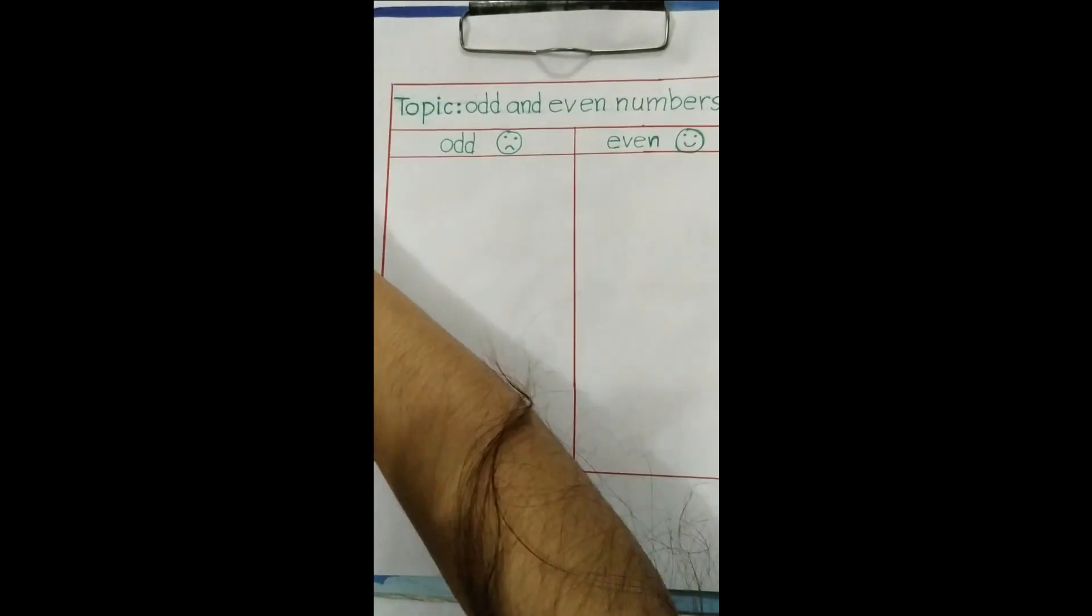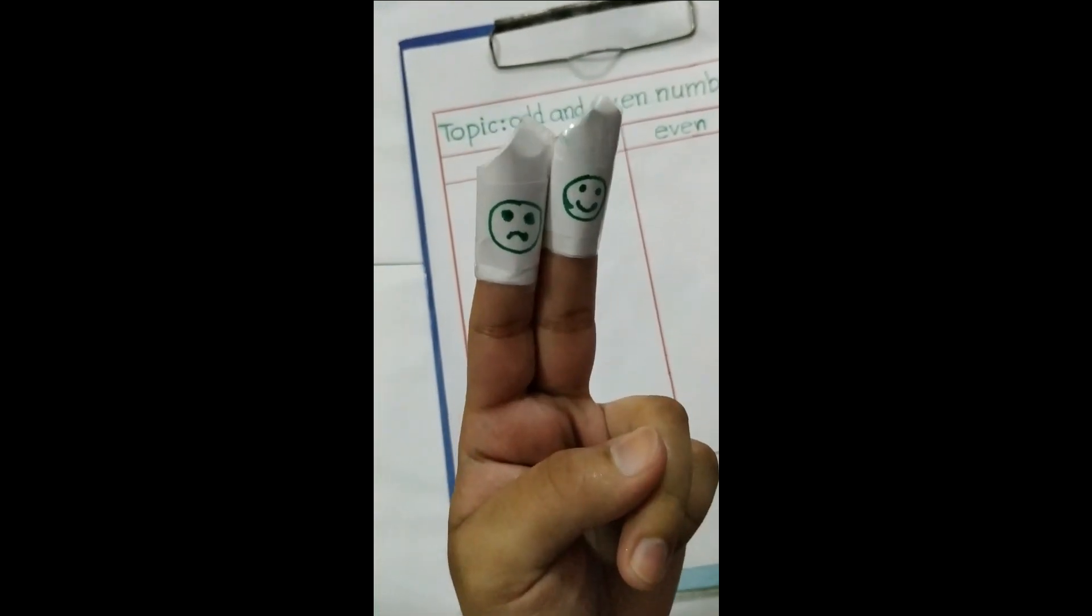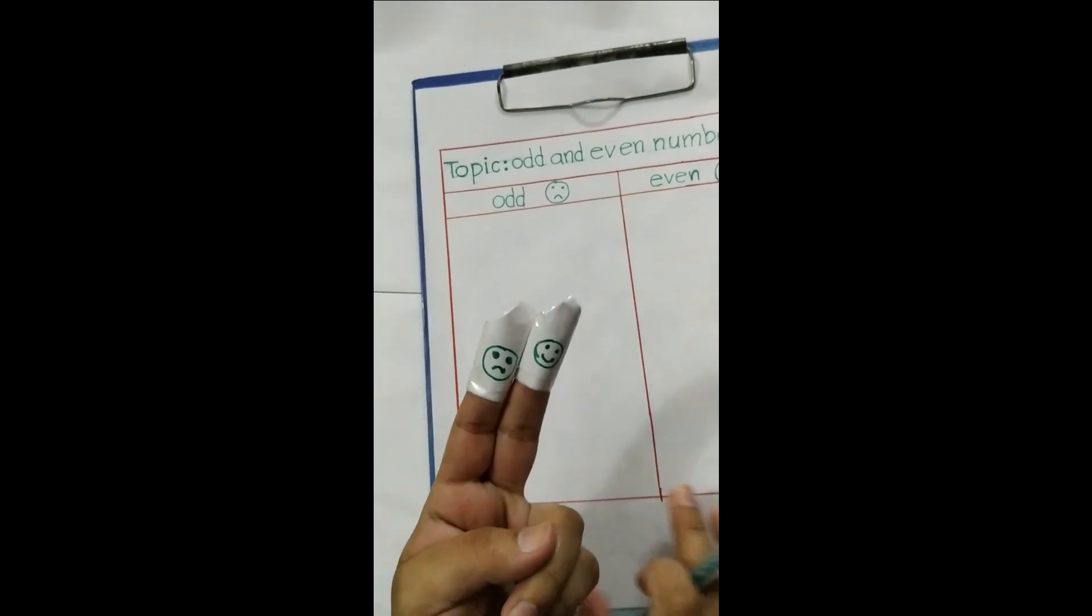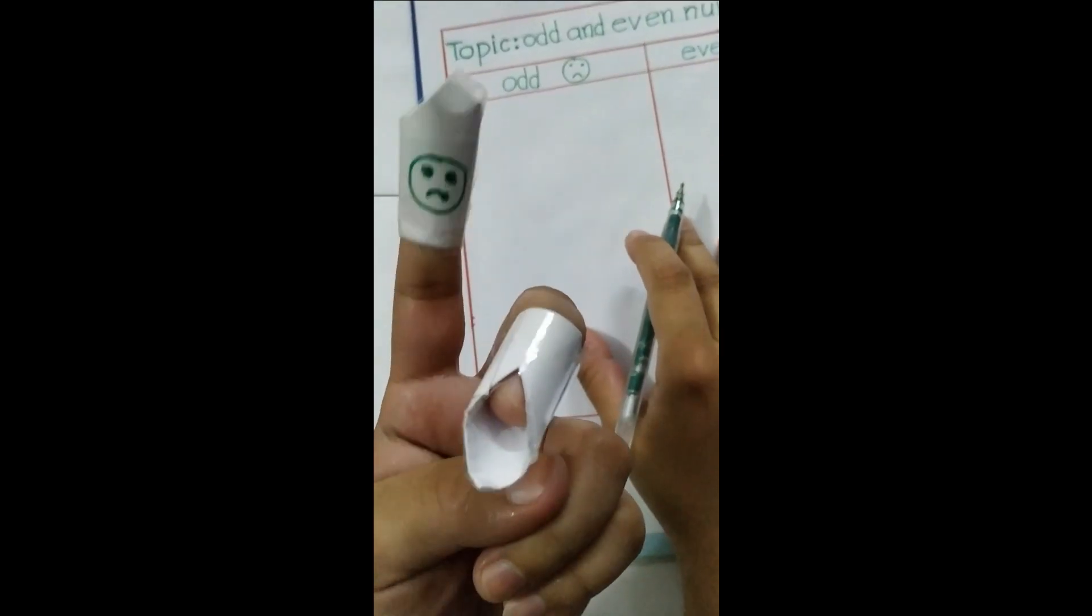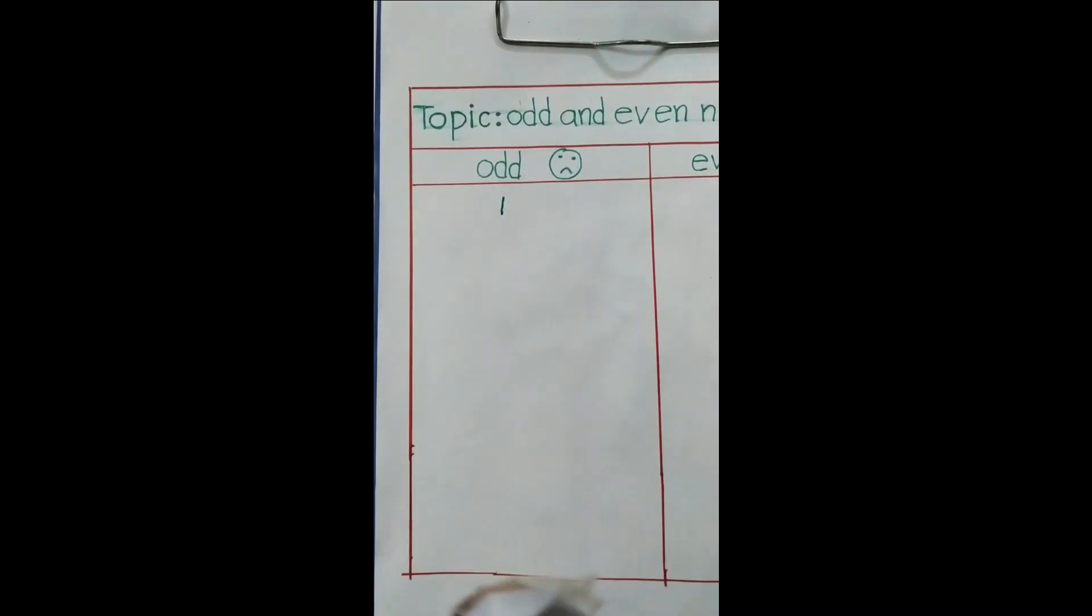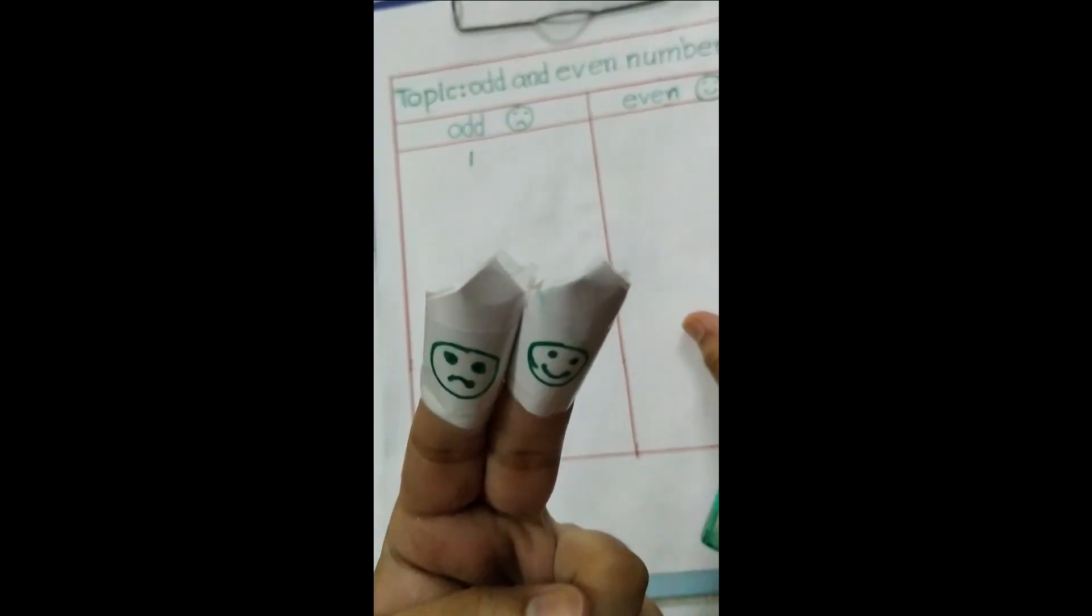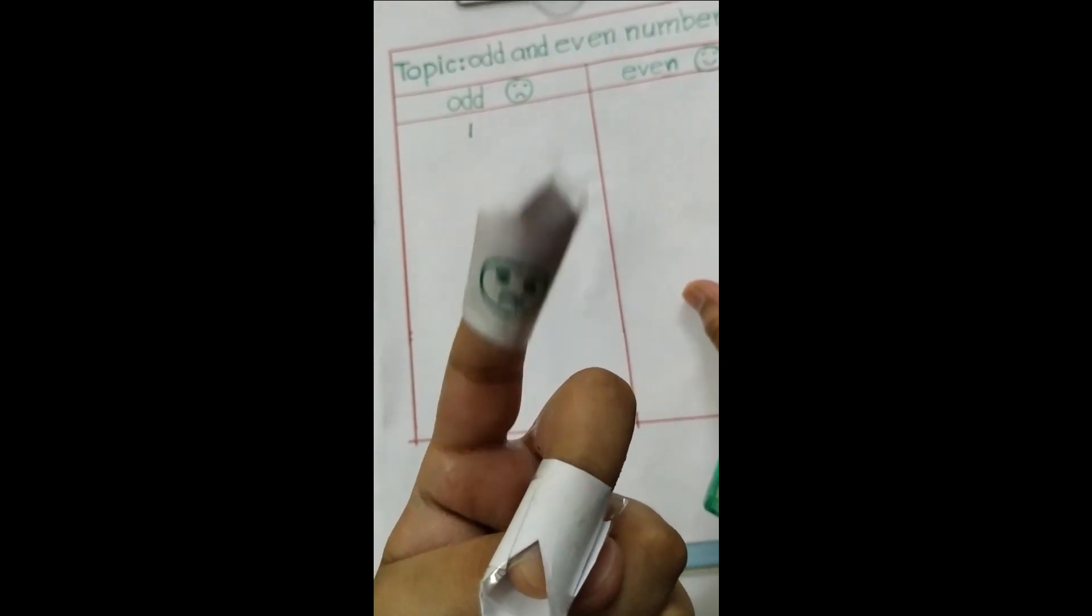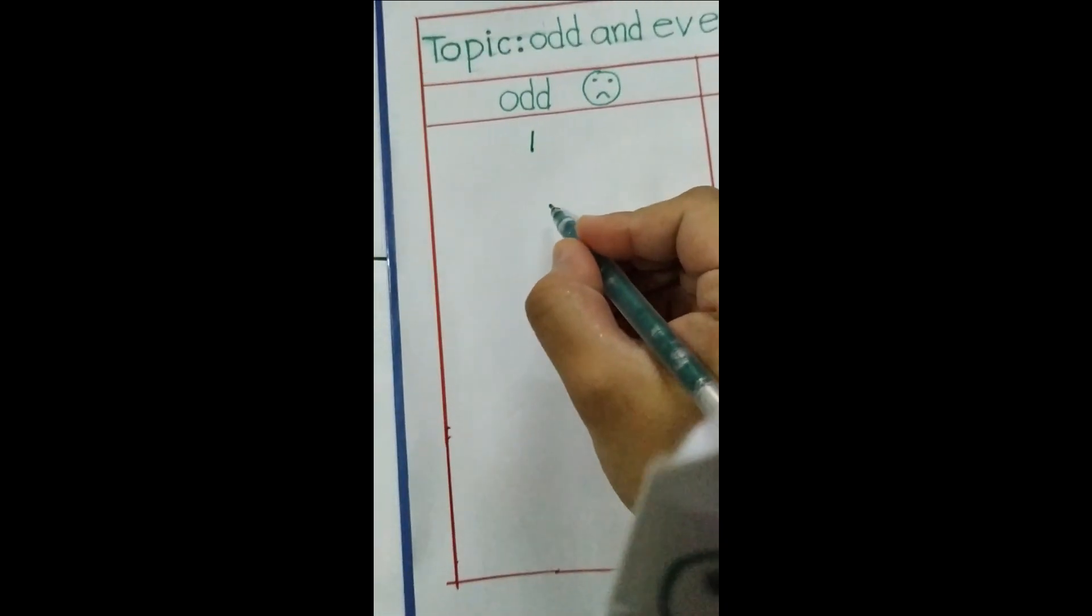Now if I want to write one, we have to use our finger like this. One is odd, so we can write here odd one. Now if I want to write three, one, two, three. Three has no friend, that means three is sad, so we can write here.